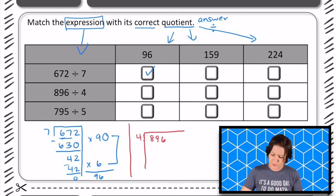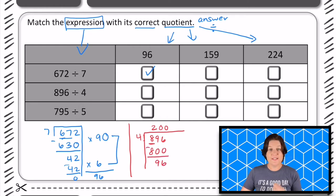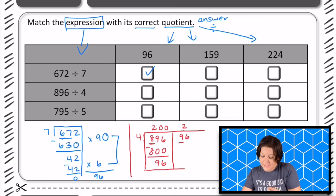So 4 goes into 8 two times. Because it's 800, that would be 200. So 200 times 4 is 800. That's a big chunk to remove, leaving us with 96. And we can still take out another chunk of 4s. I know 4 can go into 9, 4, 8, at least 2 times. So 4 times 2 is 8. 4 times 20 gives us 80. And that's a big chunk to take out.